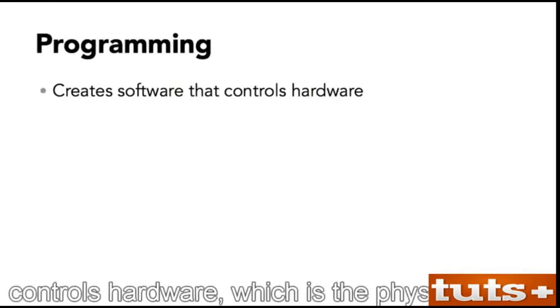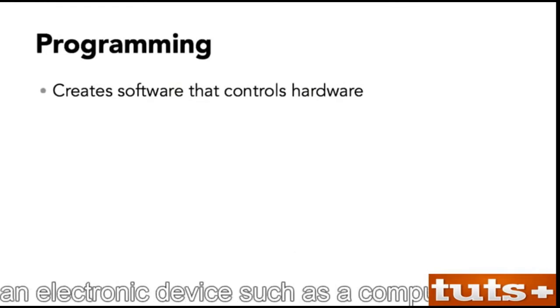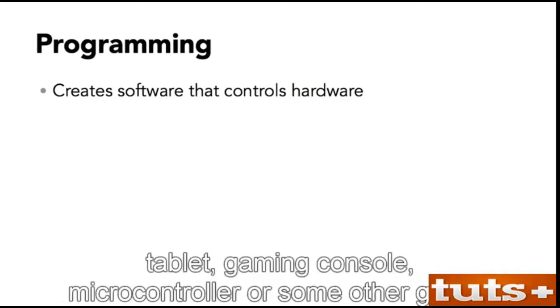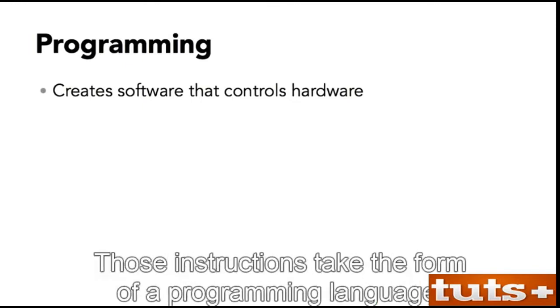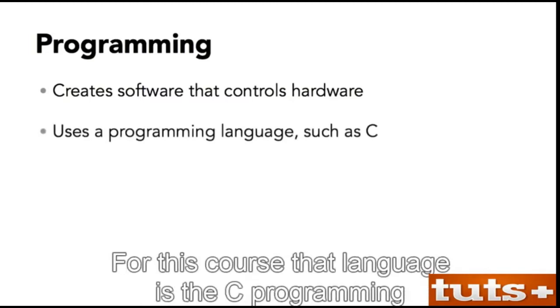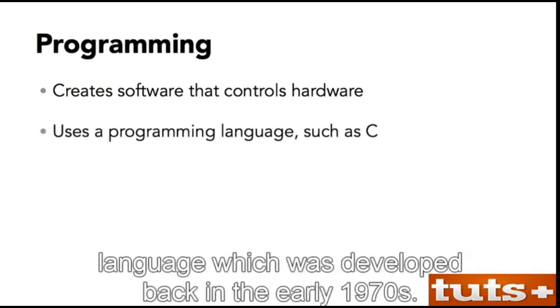Programming is where you create software. Software controls hardware, which is the physical part of an electronic device, such as a computer, phone, tablet, gaming console, microcontroller, or some other gizmo. Those instructions take the form of a programming language. For this course, that language is the C programming language, which was developed back in the early 1970s.